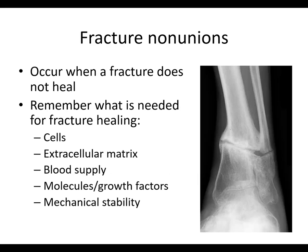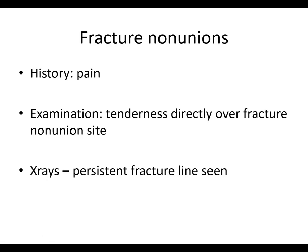Those are the things needed for fracture healing. Here you can see a fracture that didn't heal. There's a history of pain — patients will tell you they just haven't gotten better, they still hurt. On examination, they'll have tenderness directly over the fracture nonunion site, and on x-rays there's going to be a persistent fracture line. If patients are still having pain, you should confirm it's at the fracture site — it could be progressively healing and just needing time, or the pain could be from somewhere else, or there's an infection.